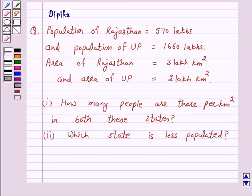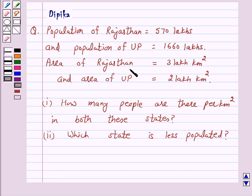Hello and welcome to the session. I am Deepika here. Let's discuss a question which says: Population of Rajasthan is equal to 570 lakhs and population of UP is equal to 1660 lakhs. Area of Rajasthan is equal to 3 lakh km² and area of UP is equal to 2 lakh km².